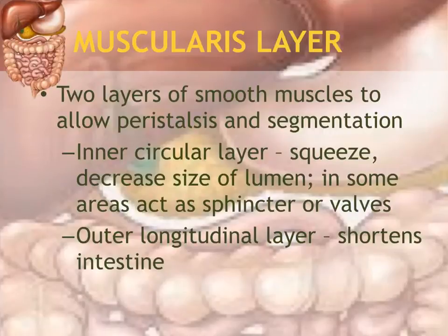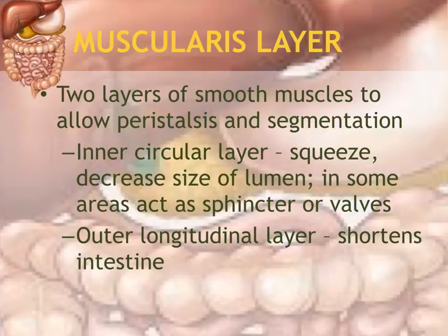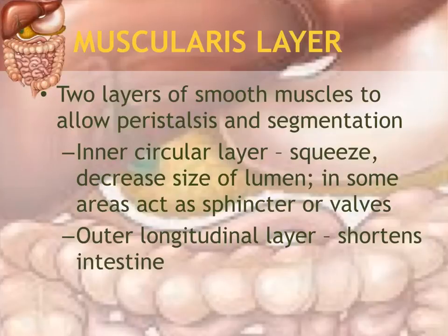The muscularis layer is a thick layer made up of two layers of smooth muscle. The inner circular layer squeezes concentrically, narrowing the lumen to push food into the next area. The outer longitudinal layer runs the length of the intestine; when it contracts it shortens the intestine, allowing for mixing. So the inner circular layer is responsible for propulsion, and the outer longitudinal layer is responsible for segmentation — the mixing of food.